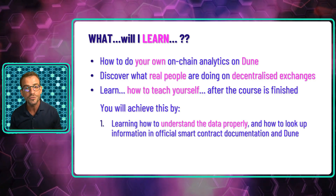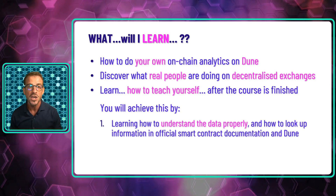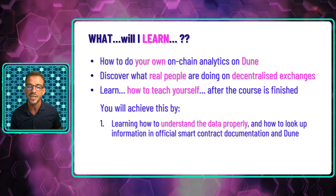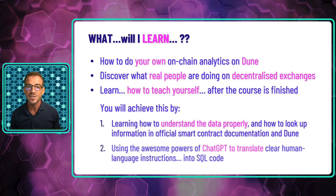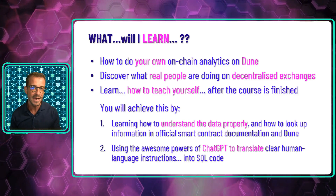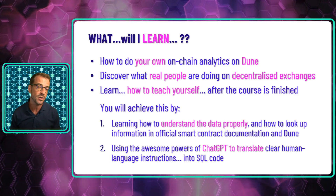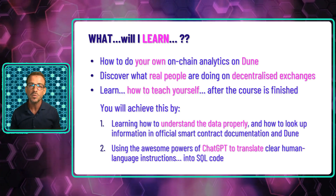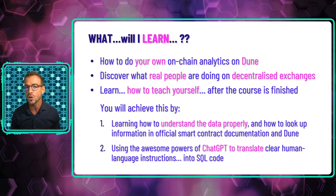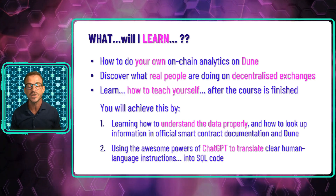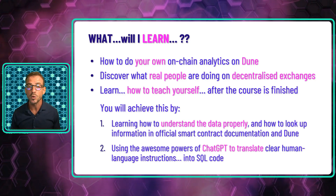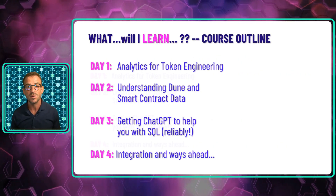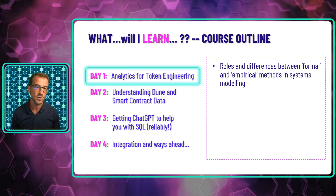The ways we're going to do this: first, by learning how to understand the data properly. We're going to walk through how we can build up that understanding for ourselves using official smart contract documentation and information that's already available on Dune. Second, we're going to harness the powers of ChatGPT to translate clear human instructions into SQL code that we can then plug into Dune. This will help us skyrocket up our learning curve much faster, even if we're total newcomers to code. So now let's take a more detailed look at each of the four days of this course, beginning with day one: analytics for token engineering.